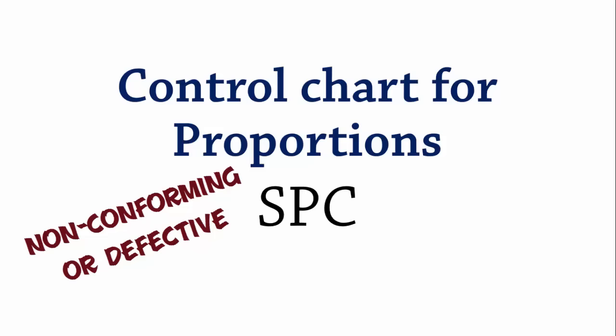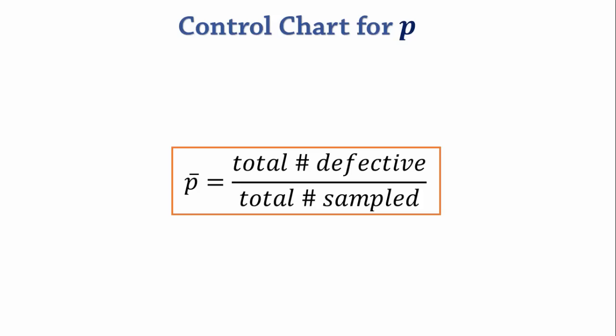The center line for the p-chart is p-bar, which is found by taking the total of defective items or non-conforming items and dividing it by the total number of items sampled.